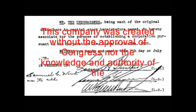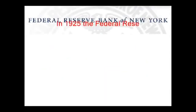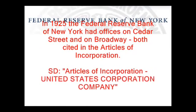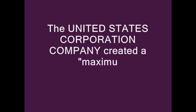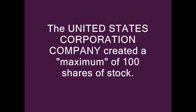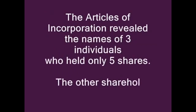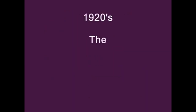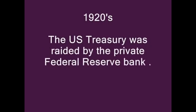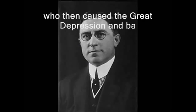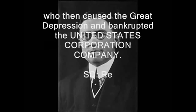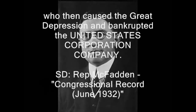1925: The United States Corporation Company was chartered in perpetuity in Florida by its fiscal agent. Source document: Articles of Incorporation, United States Corporation Company. This company was created without the approval of Congress nor the knowledge and authority of the American people. Note: in 1925, the Federal Reserve Bank of New York had offices on Cedar Street and on Broadway, both cited in the Articles of Incorporation. The United States Corporation Company created a maximum of 100 shares of stock. The Articles of Incorporation revealed the names of three individuals who held only five shares; the other shareholders were not identified.